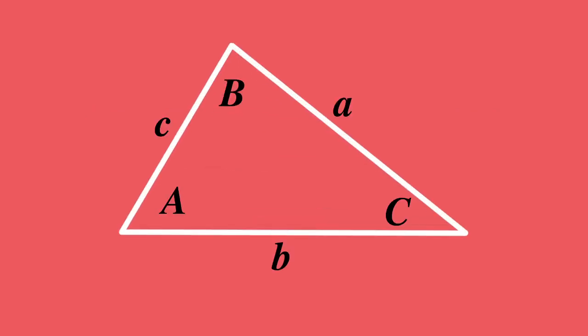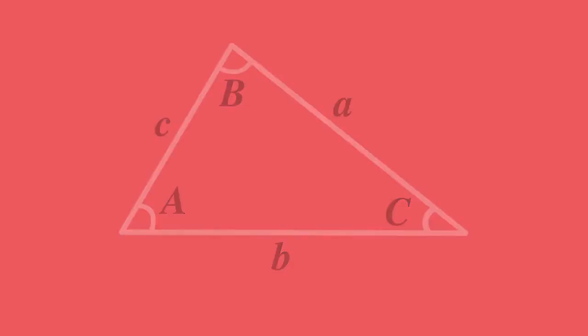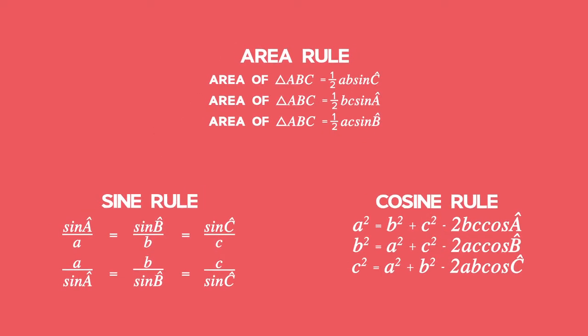By using trigonometry we can find unknown angles and lengths in triangles. In previous grades you would have learned about using the sine, cosine and area rules to solve 2D trig problems. These rules make it possible to solve triangles that are not right-angled.